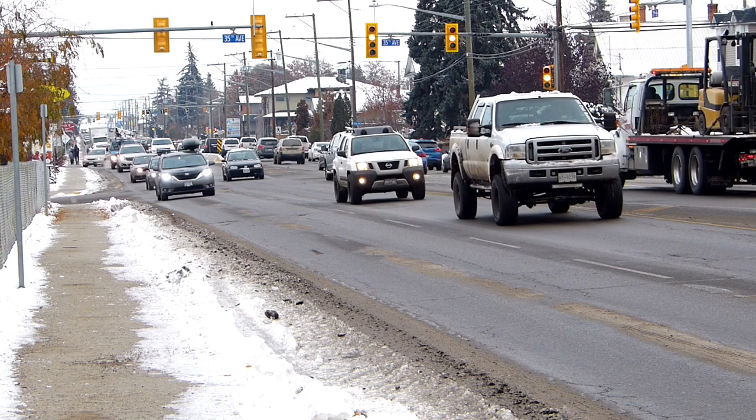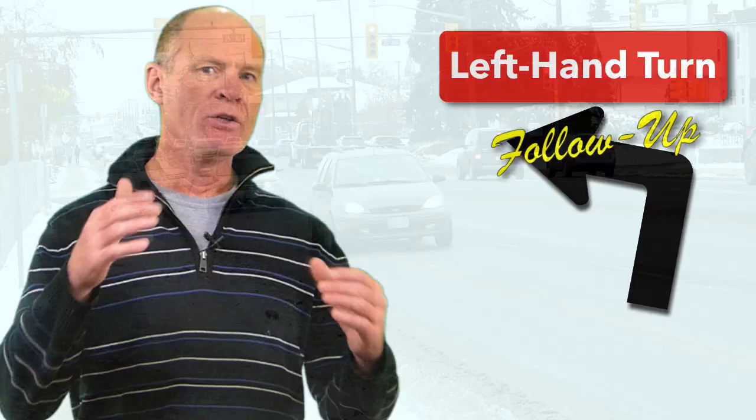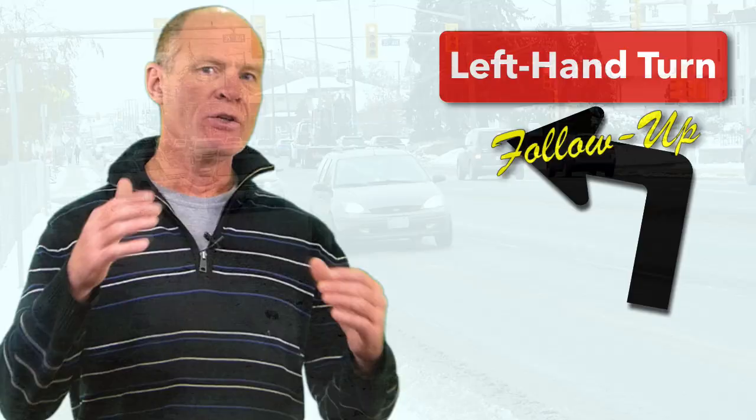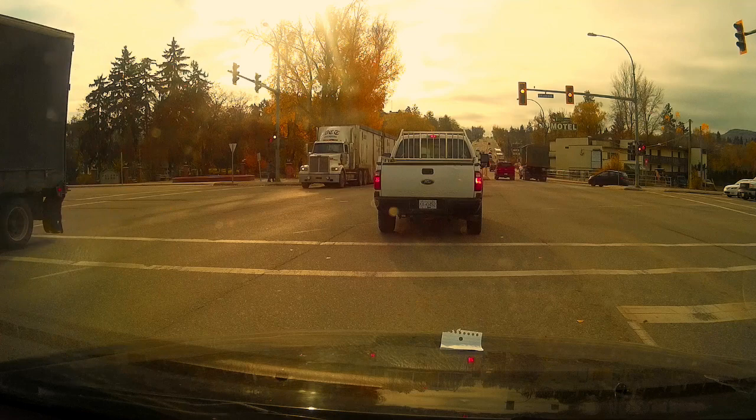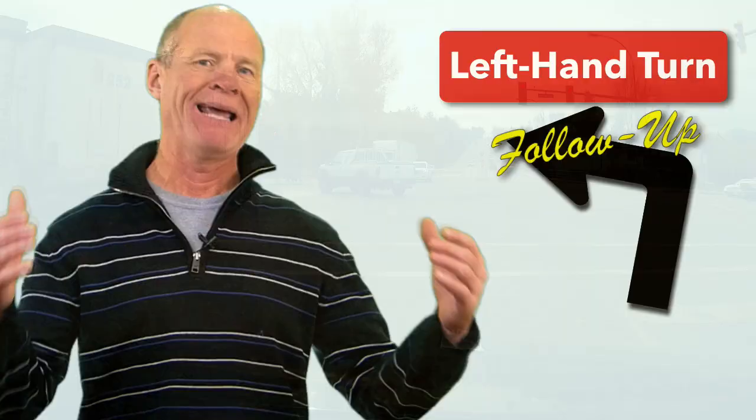So what happens for new drivers is that you get into the intersection, the light goes yellow, and you have to clear the intersection. Now before you clear the intersection, you have to ensure that the oncoming traffic is coming to a stop. Because if it's not coming to a stop or charging the yellow light as often happens and you make your left-hand turn, you're going to turn into that oncoming traffic and be involved in a crash.